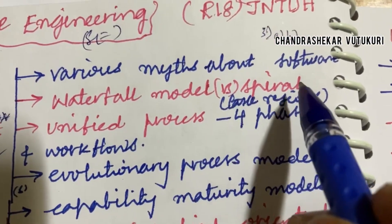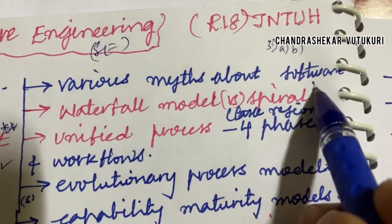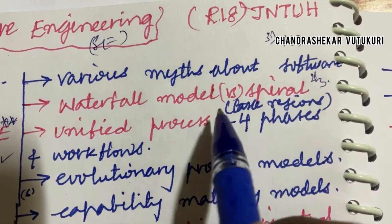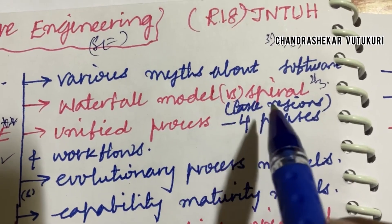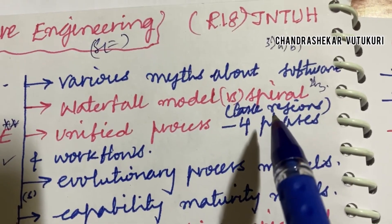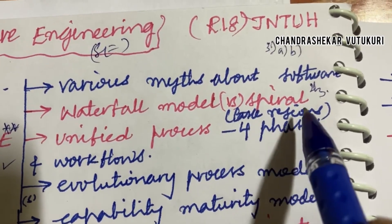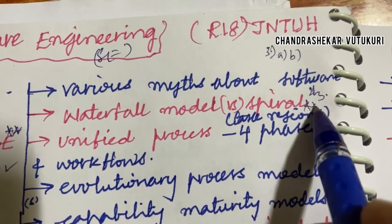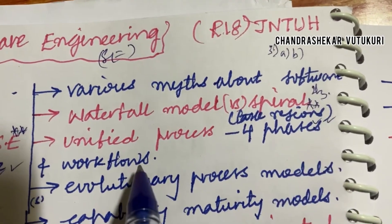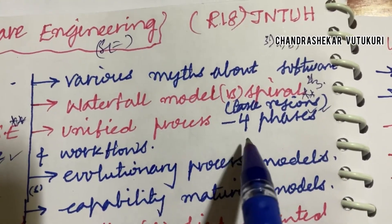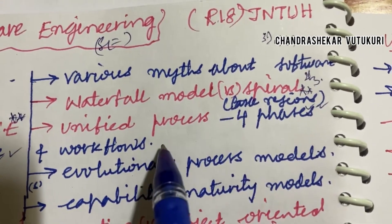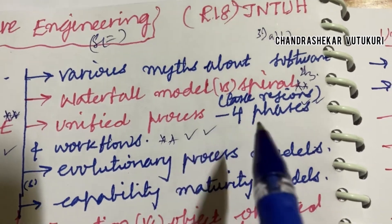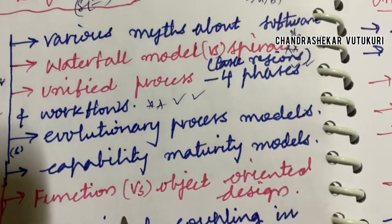The various myths about software is said to be a two or three mark question. Waterfall model versus Spiral model is said to be a likely short question that is repeatedly asked. You may also be getting questions on the Unified Process and its four phases and workflows, which is also said to be a top most question.